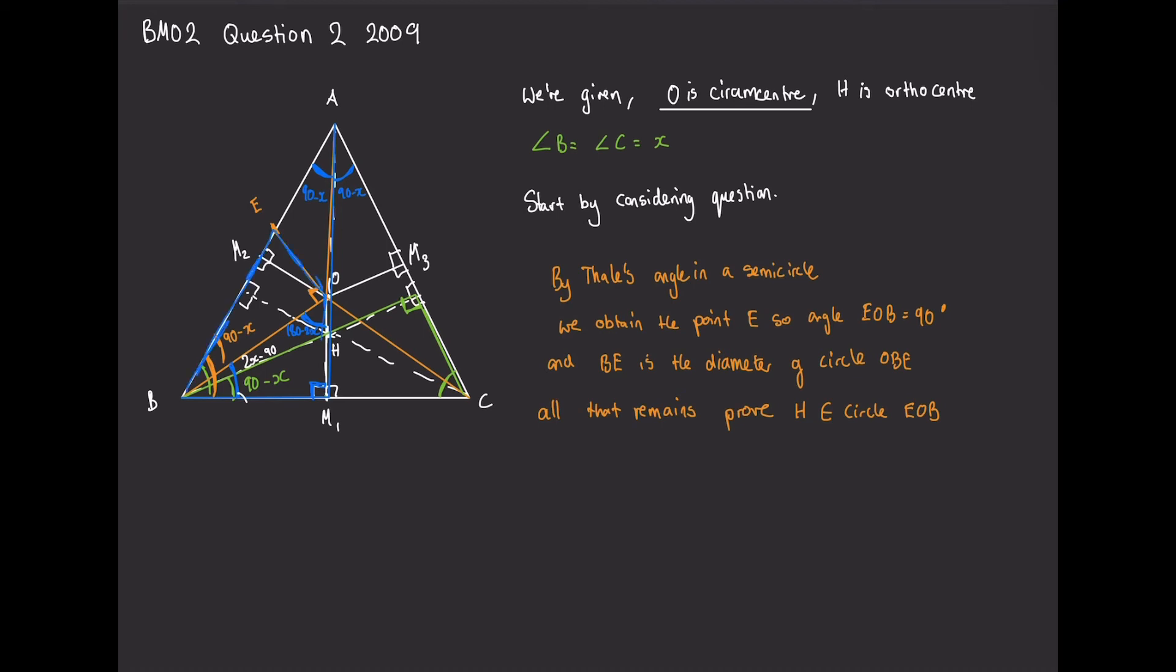Once we've done that, what we've essentially proven is that in the circle BH which is the one that contains H as well as B and E and O, BE is the diameter. We'll start by acknowledging that we need to prove that BHOE is actually a cyclic quadrilateral in order for all four of the points to lie on a single circle. A clever way to do that would be to draw it separately so that we don't get it mixed up with the current diagram. We'll label the angles we have so far, and that angle is just 90 minus x plus 2x minus 90, minus the angle HBM1, and that just gives us 2x minus 90.